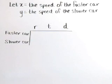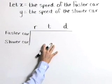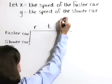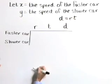Now let's move on to step three and try to write a system of equations. I'm going to use a table to help me organize my information. Let's make a note that d is equal to rt. Distance is rate times time.